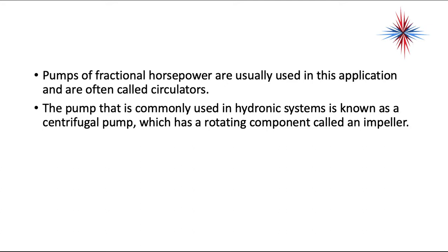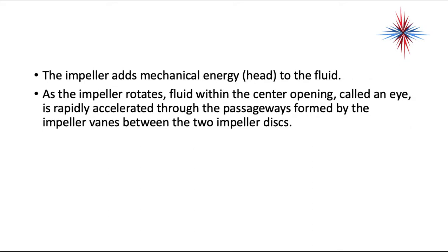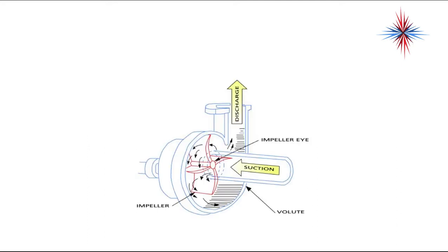The pump most commonly used in hydronic systems is known as a centrifugal pump, which has a rotating component called an impeller. The impeller adds mechanical energy called head to the fluid. As the impeller rotates, fluid within the center opening called the eye is rapidly accelerated through the passageways formed by the impeller vanes between the two discs. Fluid comes in through the suction, enters the center, gets spun at high speed, and is put out through the discharge.